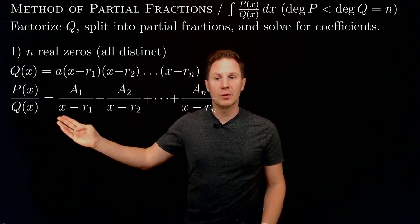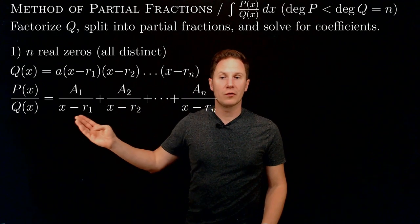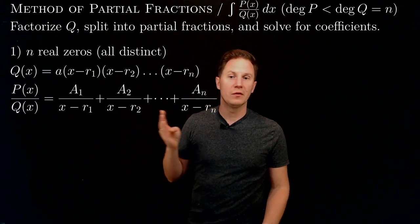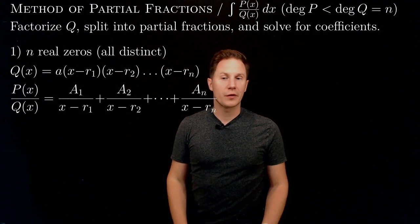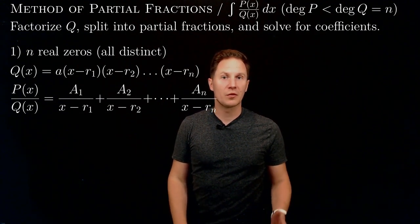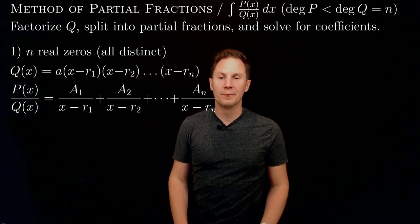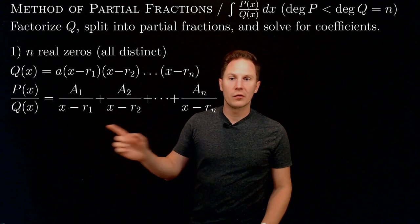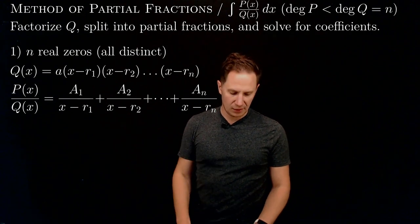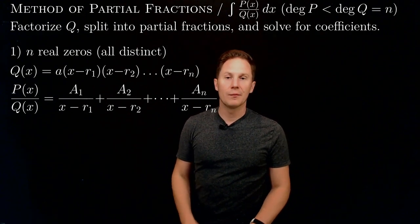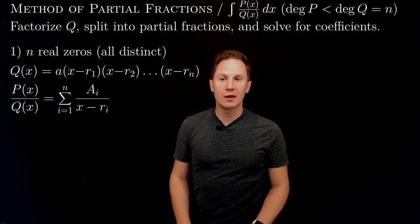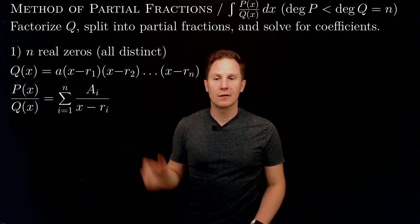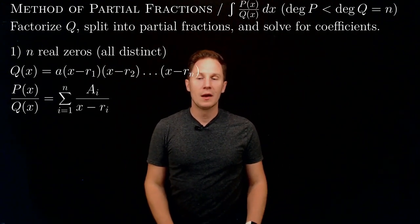Integrating p over q is then just the sum of the integrals of these partial fractions, which we can express in terms of the natural logarithm. This sum can be written in a more succinct form using sigma notation.